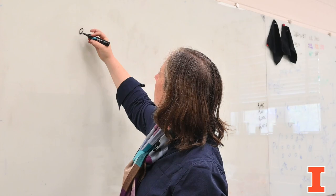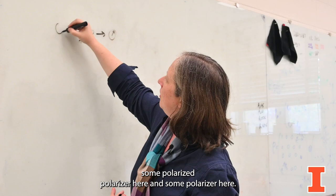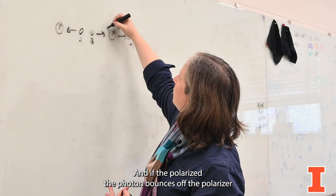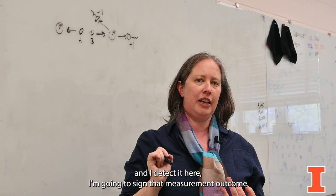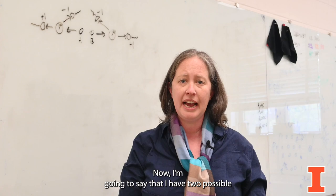The setup that we have is we're going to start with two photons. Photon A going to the left, photon B going to the right, and then we're going to be measuring their polarization. I have some polarizer here and some polarizer here. If the photon makes it through the polarizer and I detect it, I'm going to assign that measurement outcome plus one. And if the photon bounces off the polarizer and I detect it here, I'm going to assign that measurement outcome minus one.